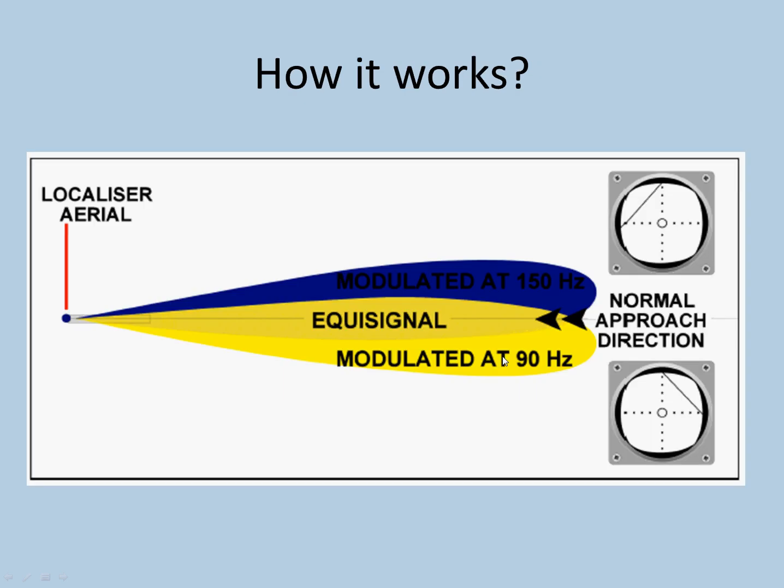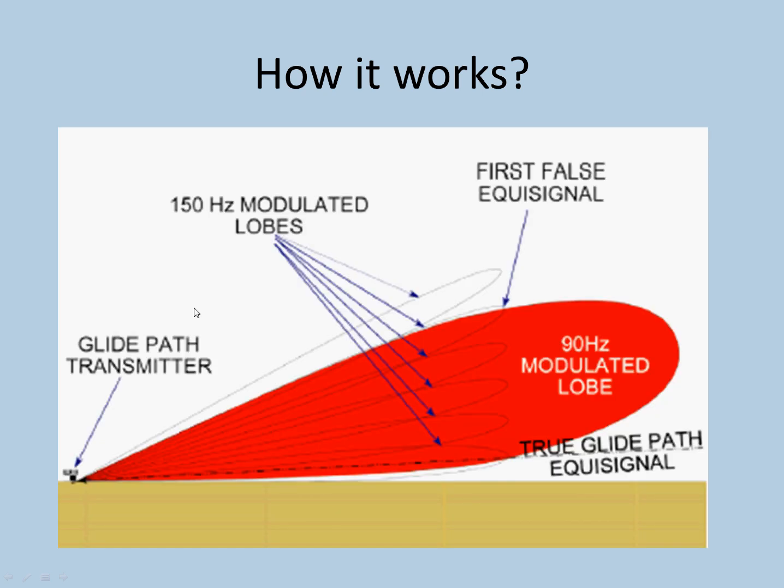Basically, it is in the middle and there is no difference, and hence the aircraft is on the localizer. The glide path also works on a similar concept.